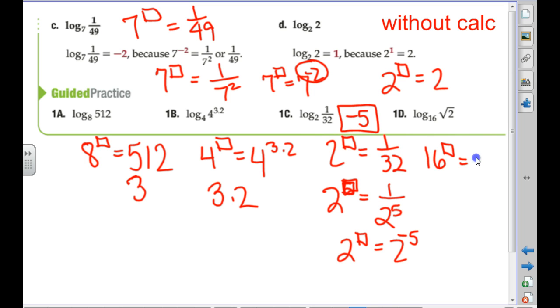So, this is 16 to what power is square root of 2? Well, this is 2 to the 1 half. What is this? 2 to the... What's 16? 2, 4, 8, 16. 2 to the 4th. I'm not writing this well at all. There should be a 4 there. So, this is 2 to the 4th to some power equals 2 to the 1 half.